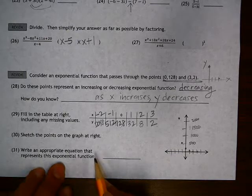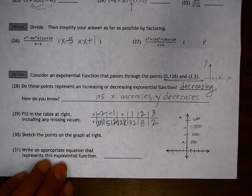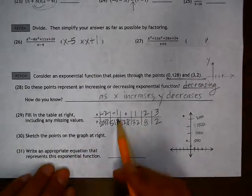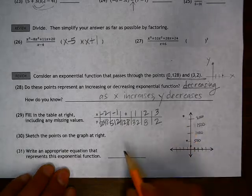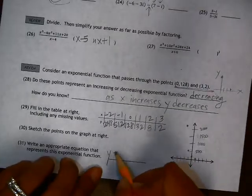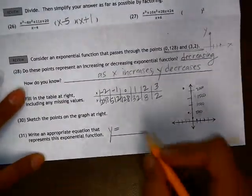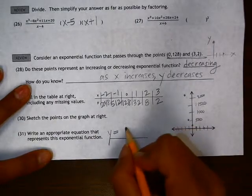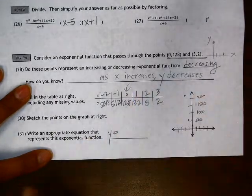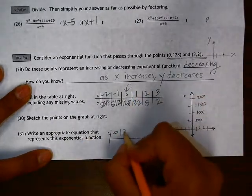Lastly, we need to write an equation that represents this exponential function. So this is, in essence, a geometric pattern. So y equals, when we have a geometric pattern, we first need the starting value. The starting point is here when x equals 0, so 128.